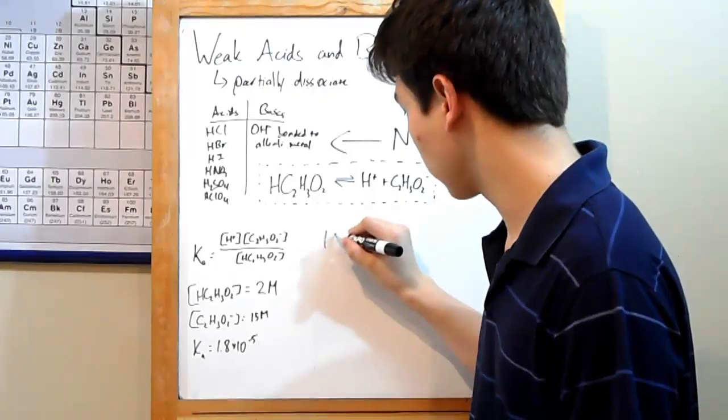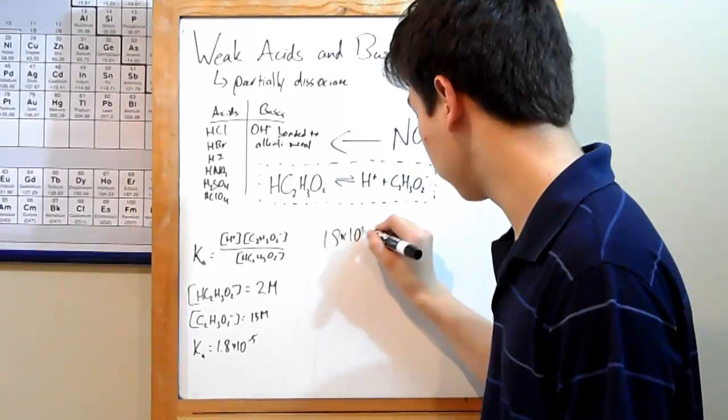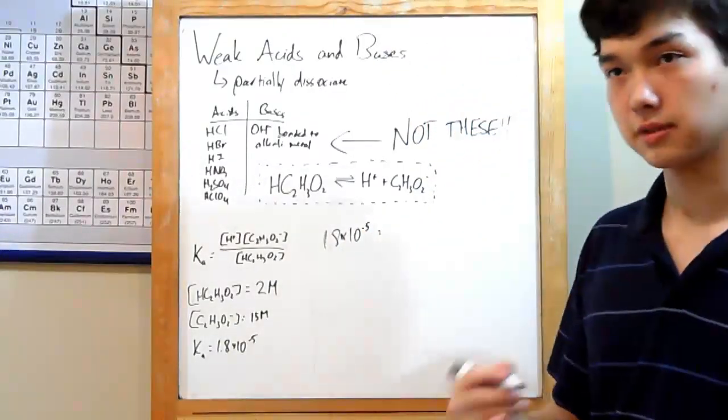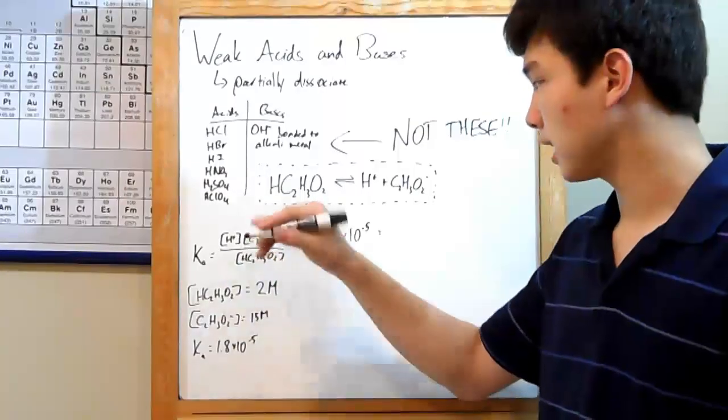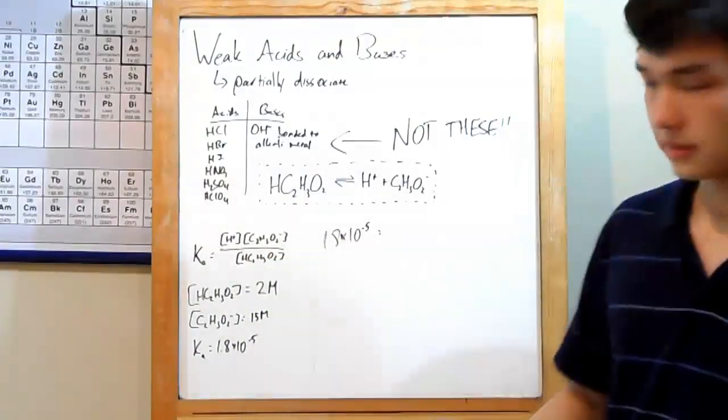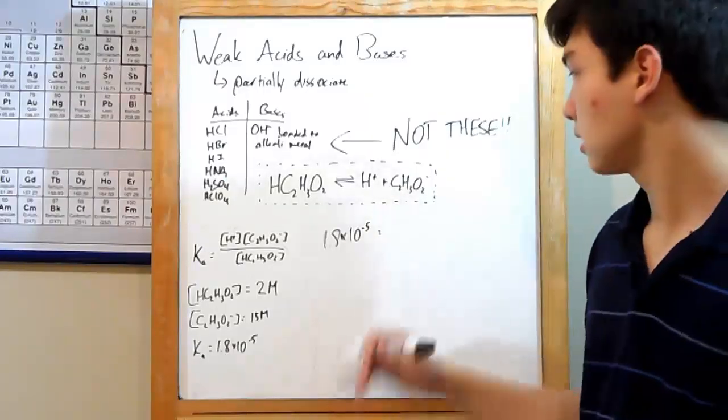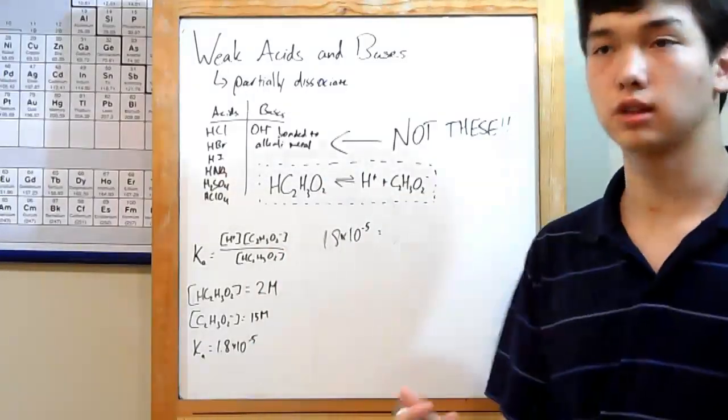Your Ka is simple. Plug in 1.8 times 10 to the negative fifth. The way you arrange an equilibrium expression for acids and bases: ions on top, acid or base on the bottom. Bring your ions or acid or base to the power of their coefficients. These ones don't have coefficients, so to the power of 1.